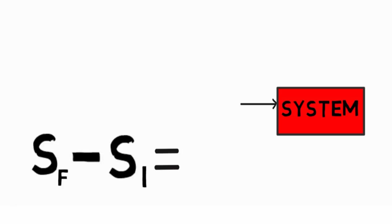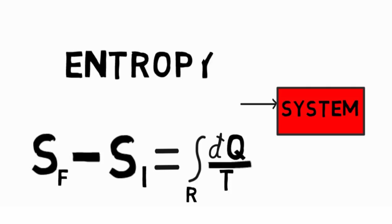That is, there exists a property of a system whose value at a final state minus its value at an initial state is equal to r. This property is called entropy and is denoted by s.